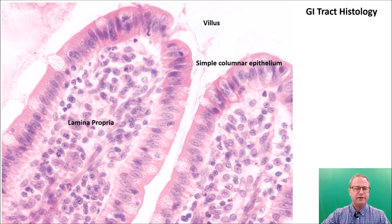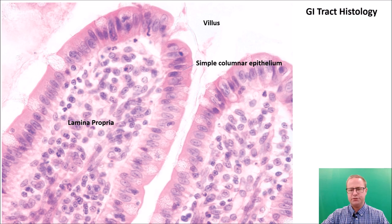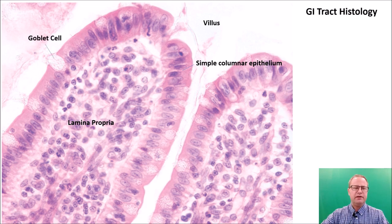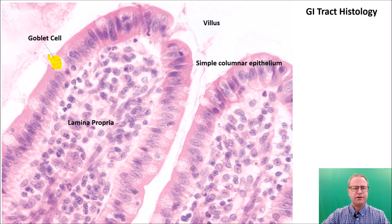Within each villus, beneath the simple columnar epithelium, we have the lamina propria, which is areolar and other connective tissue. And what mucosal epithelium would be complete without goblet cells? Goblet cells secrete mucin, which hydrates to become mucus. Mucus is necessary to protect the GI layers and to keep things moving smoothly across the intestinal epithelium.